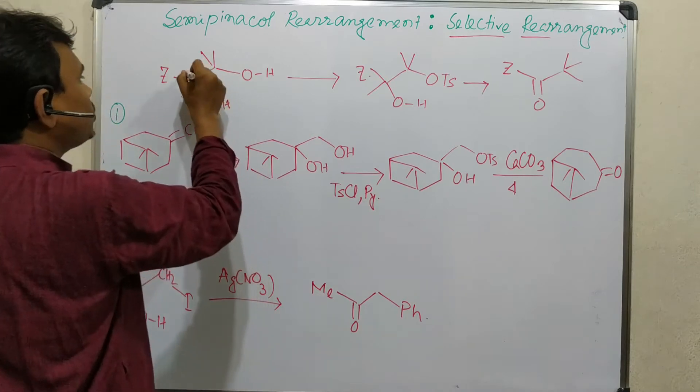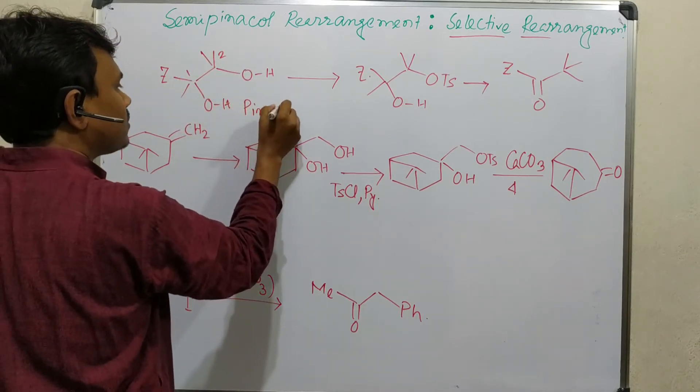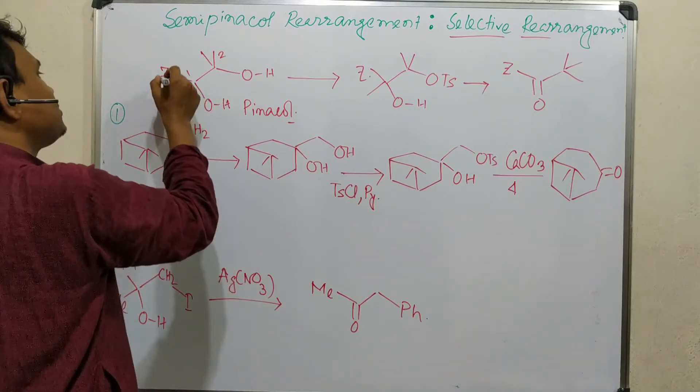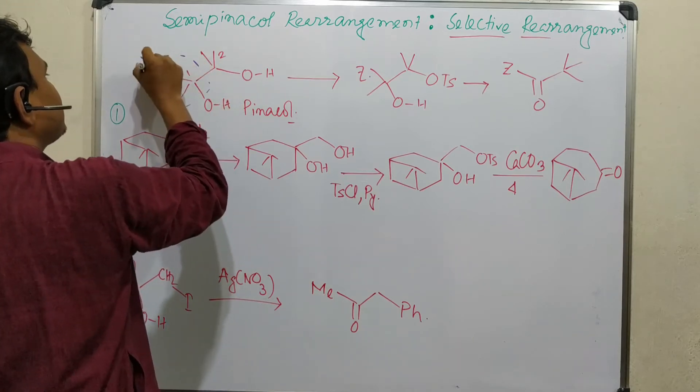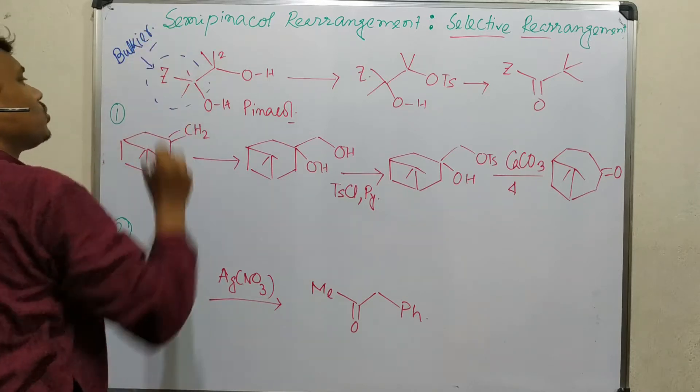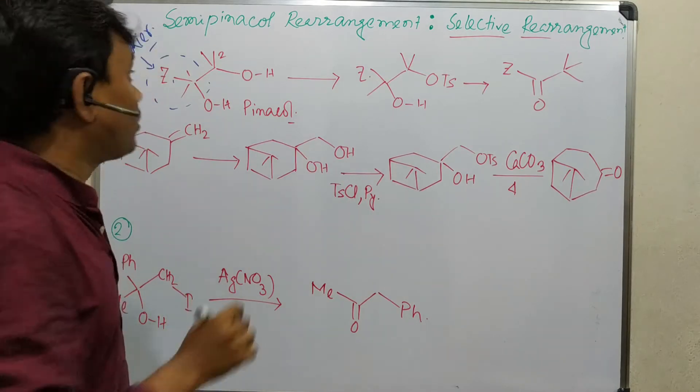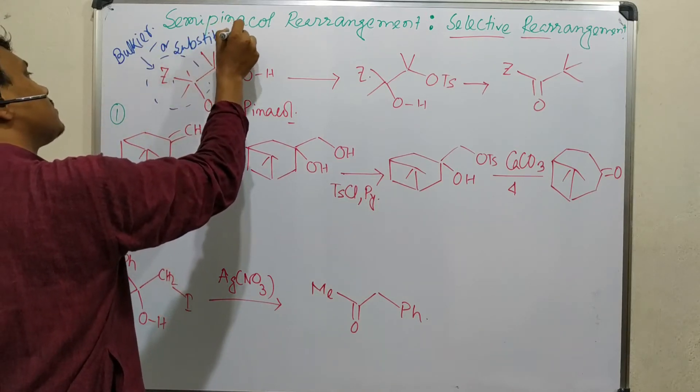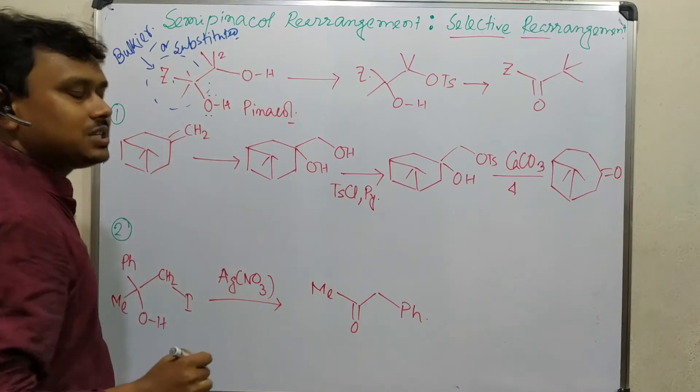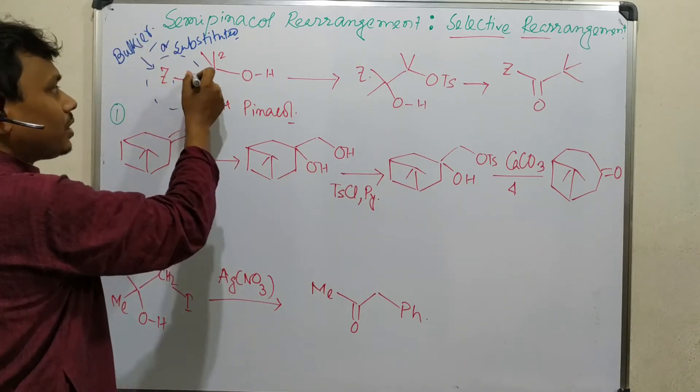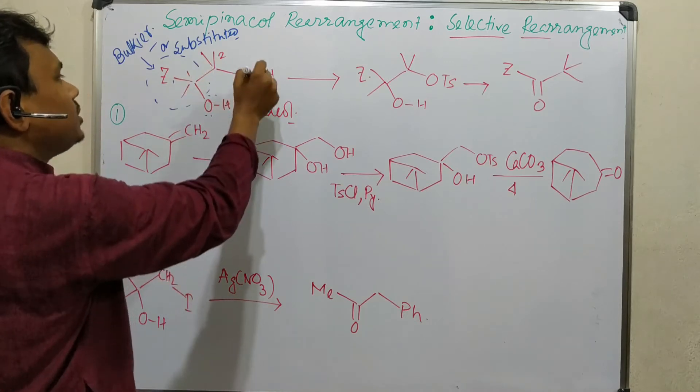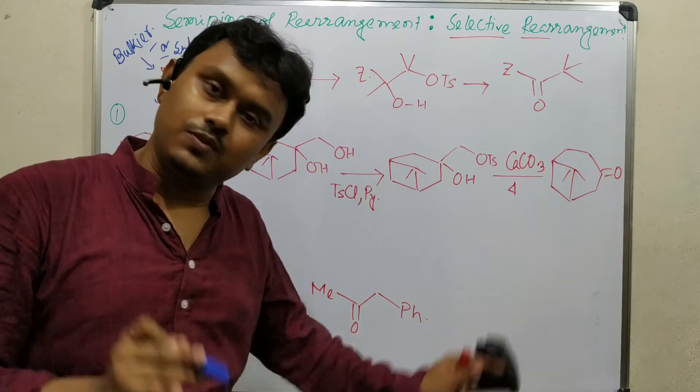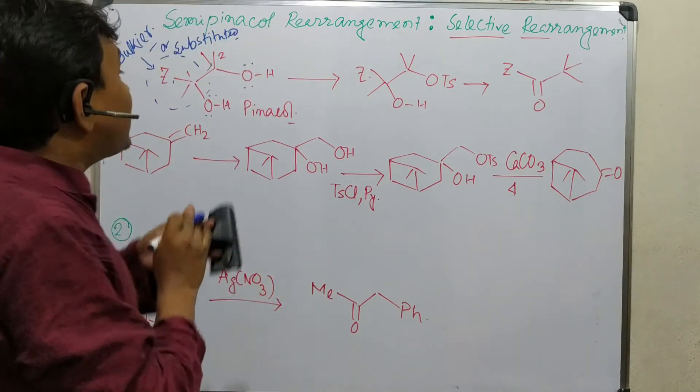The basic concept is that 1,2-diol we call as pinacol. If we do acid-catalyzed rearrangement, what is going to happen? Acid is going to protonate first. If we consider this part is bulkier, or more substituted, what is going to be expected is that protonation will happen on this oxygen, because after protonation the generated carbocation is more stable.